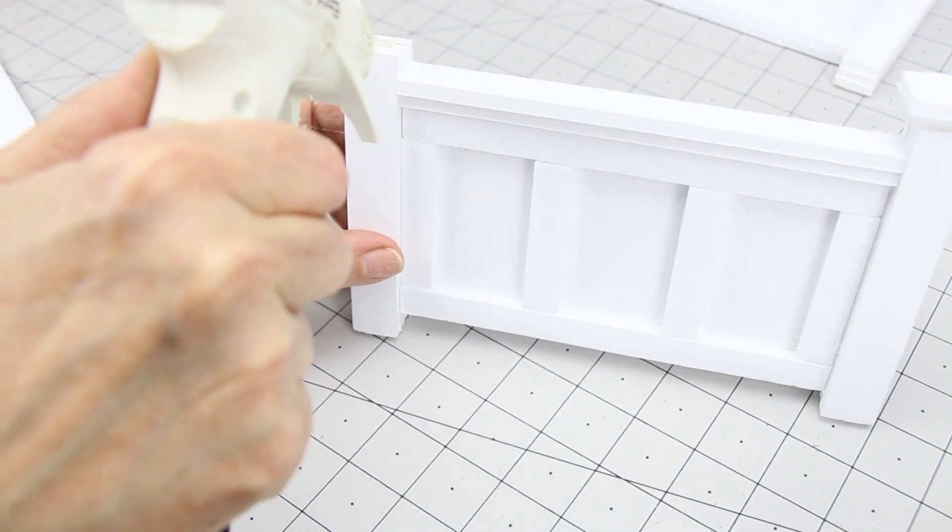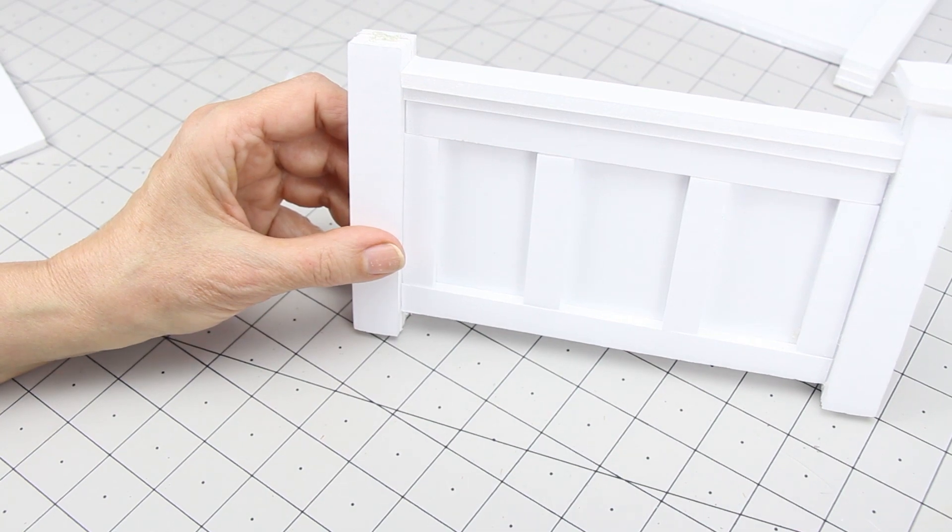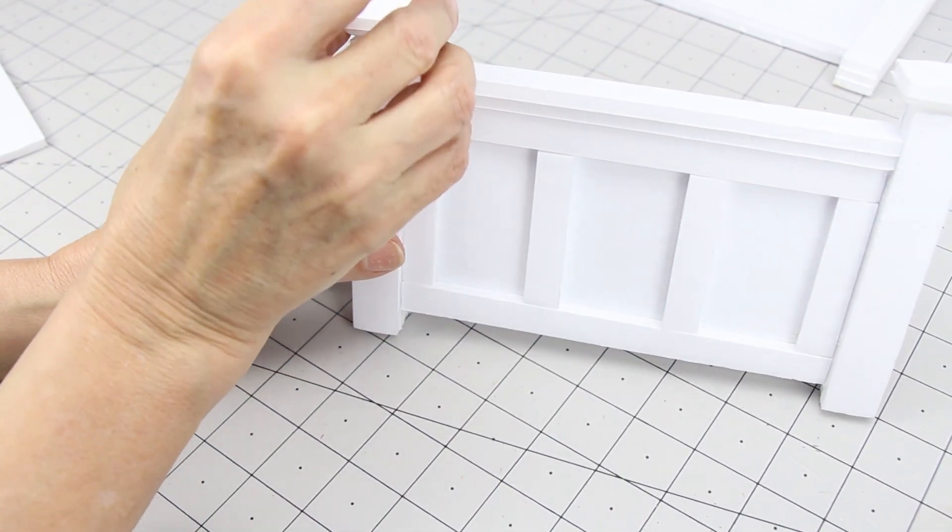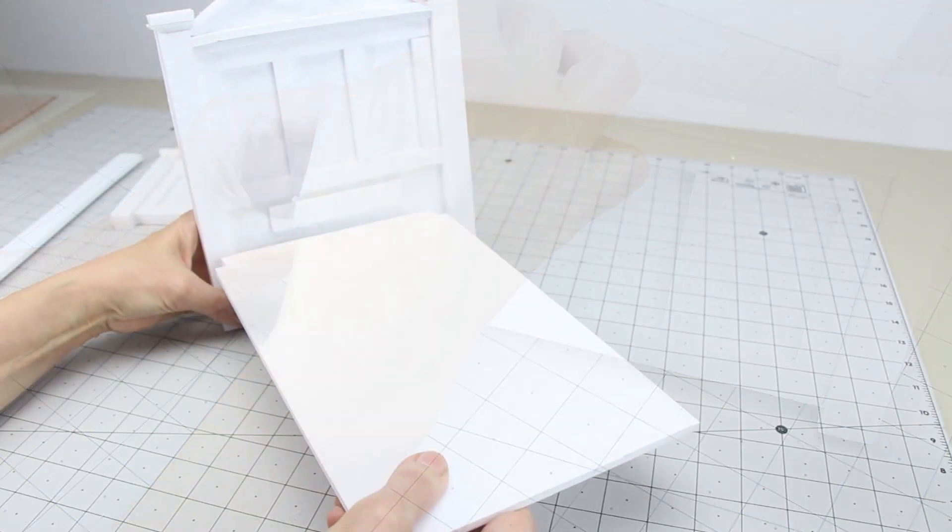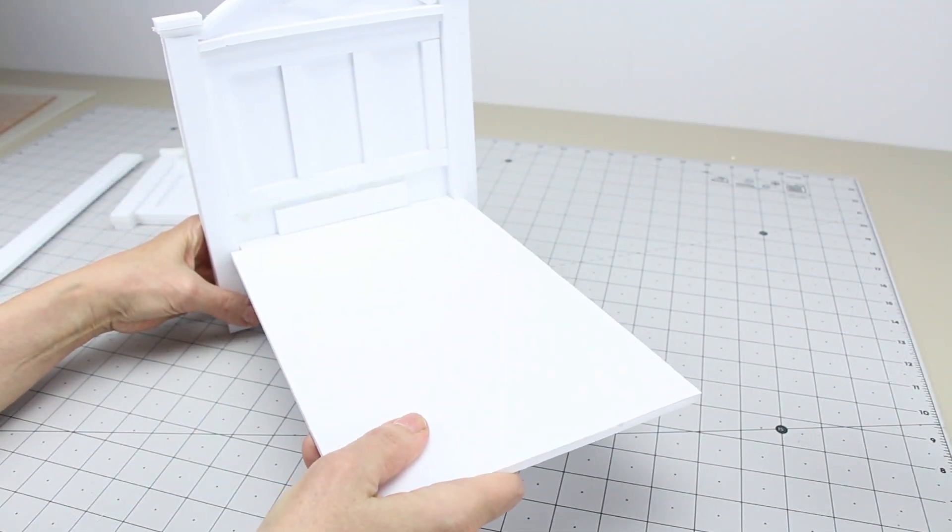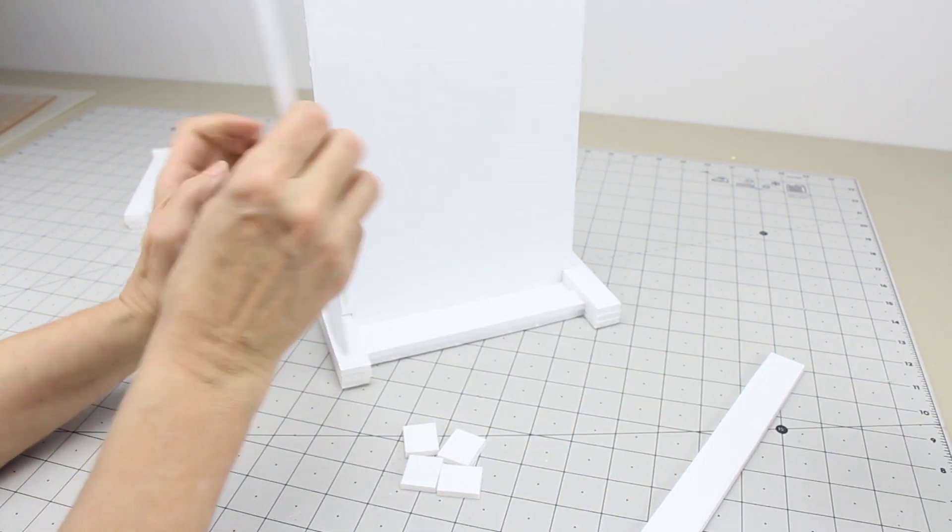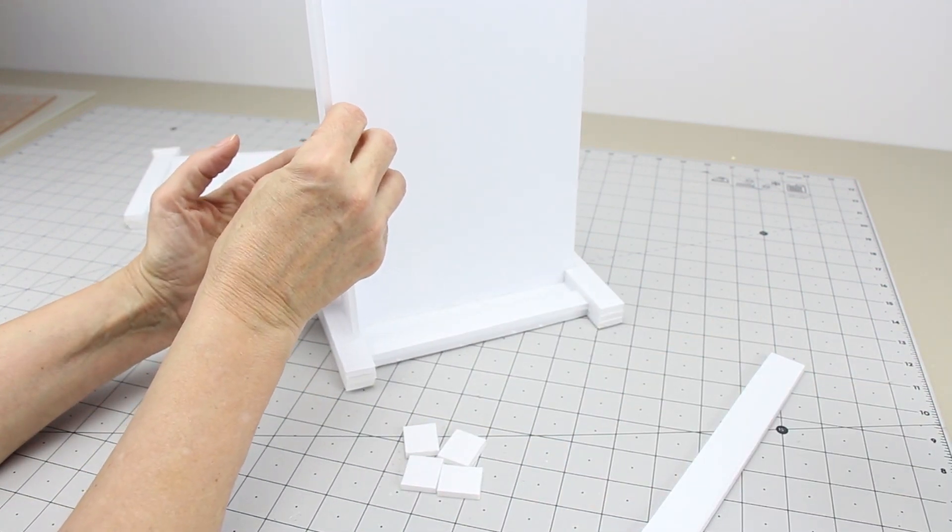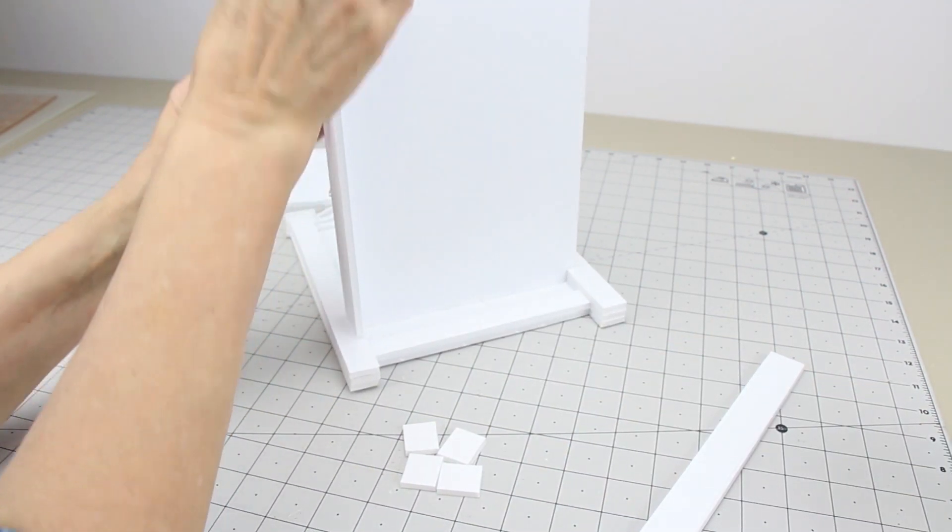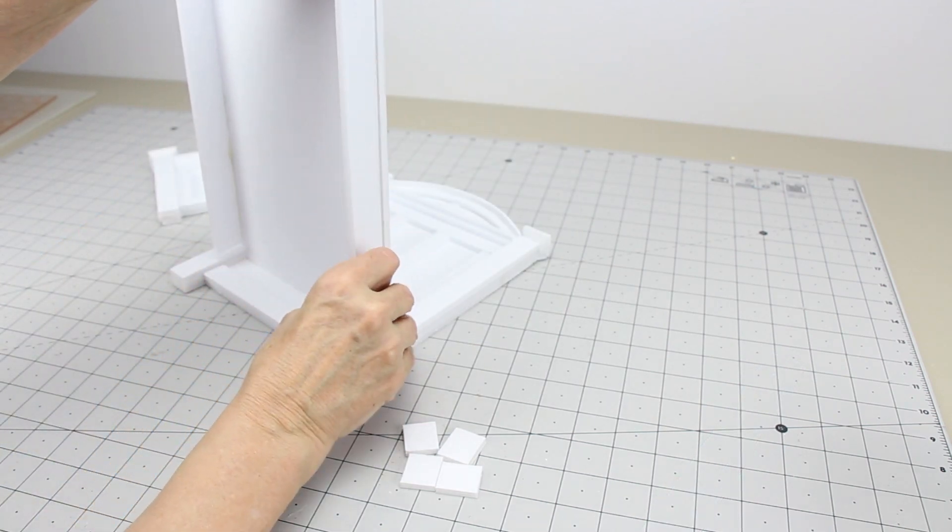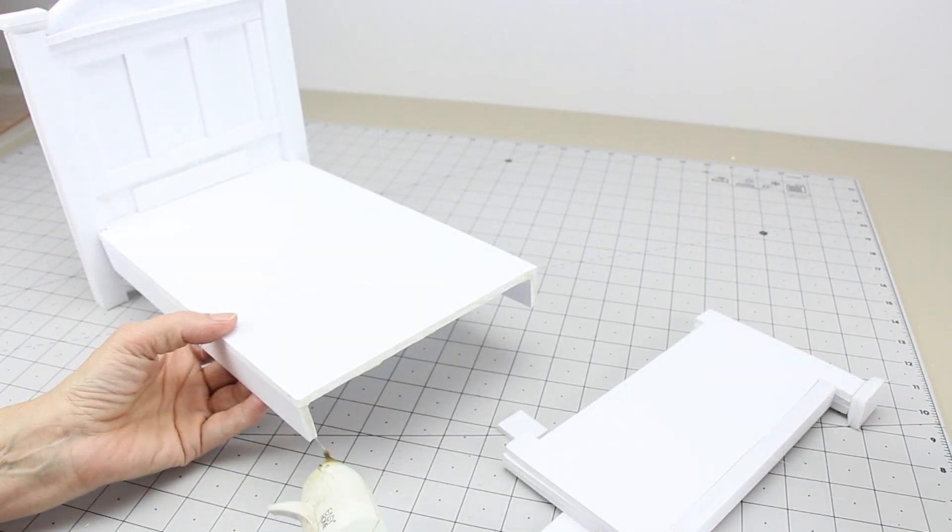Do the same for the footboard. Take the platform and glue it to the headboard. Then take your two side pieces and glue to the platform. Then glue on your footboard.